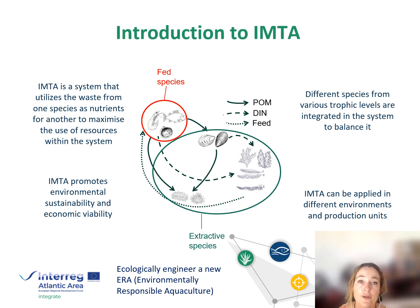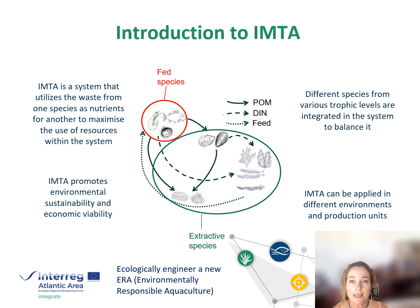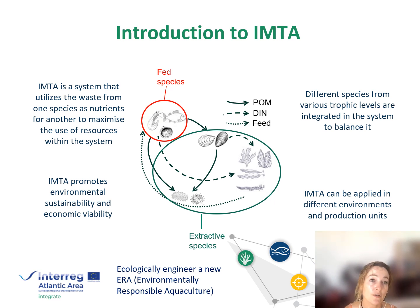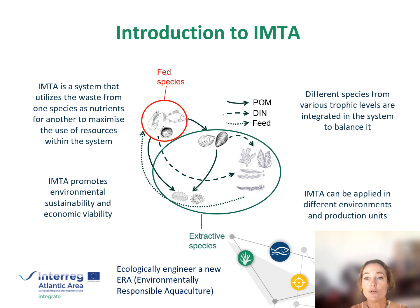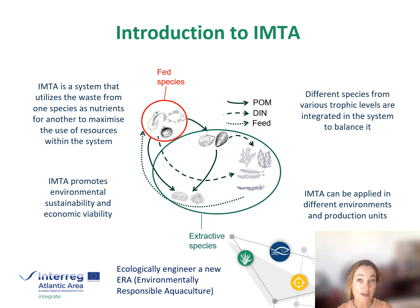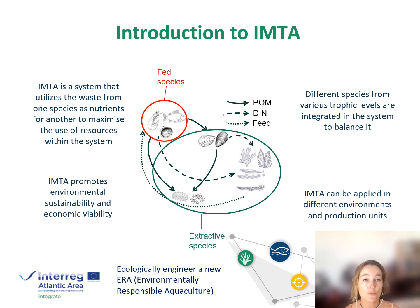Here is some further information on the functioning of an IMTA system. Basically, it's a system that utilizes the waste from one species as nutrients for another in order to maximize the use of resources within the system. Therefore, it includes different species from various trophic levels — some being fed species and others being extractive species — and their integration, as well as the ratio at which they are found within the system, will allow it to be balanced.